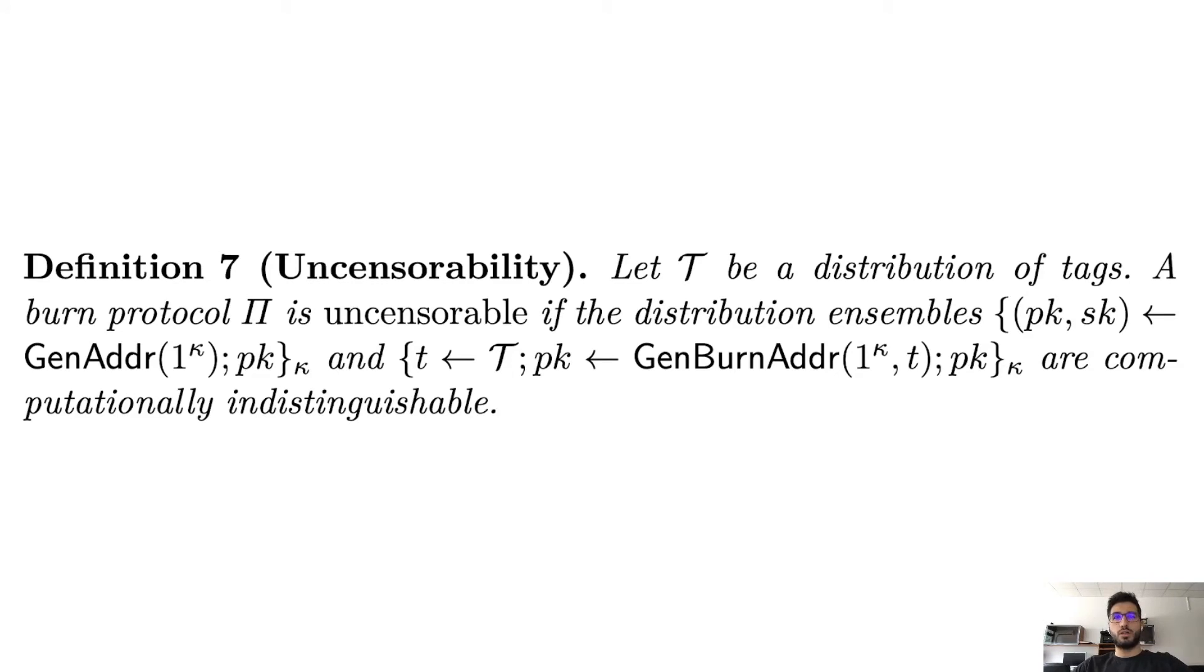Uncensorability is formally defined in the following way. We have two distribution ensembles. One of them is basically the address that would be normally generated by the blockchain protocol, and then the other is addresses generated by the burn protocol. We define the uncensorability with respect to some distribution of tags T. The distribution of the burn addresses is as follows: We draw a tag from this distribution of tags, and then we generate a burn address for that tag, and then we return that address. This is how this second distribution ensemble is produced. Then we require those two distribution ensembles to basically be indistinguishable.